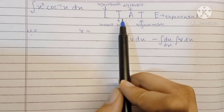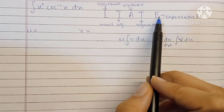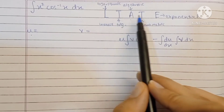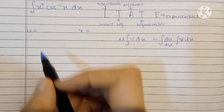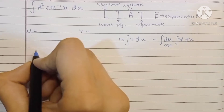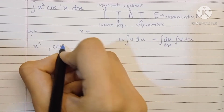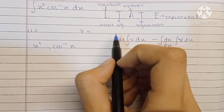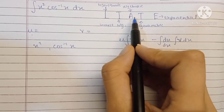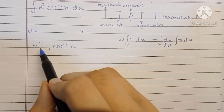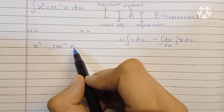The LIATE order is: Logarithmic, Inverse trigonometric, Algebraic, Trigonometric, and Exponential. So here the two terms of the integral are x squared and cos inverse x.